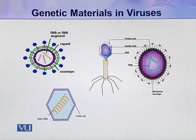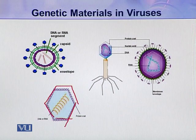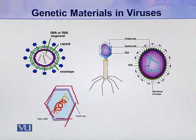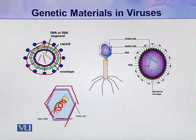Here you can see different types of viruses. In this virus, this is a protein coat, and inside the protein coat a single molecule of DNA or RNA is present. In this other virus, there is also a protein coat, and inside the protein coat there are two or three segments of DNA or RNA.